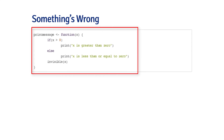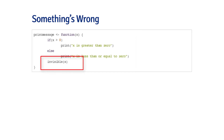Here I've created a simple function: it takes your input, checks if it's greater than zero and prints a message saying 'x is greater than zero', or if it's less than or equal to zero it prints that instead. I also want to mention invisible() — a function that prevents auto-printing. Normally when you execute a function, it returns the last element in its body, and R will auto-print that to the console.